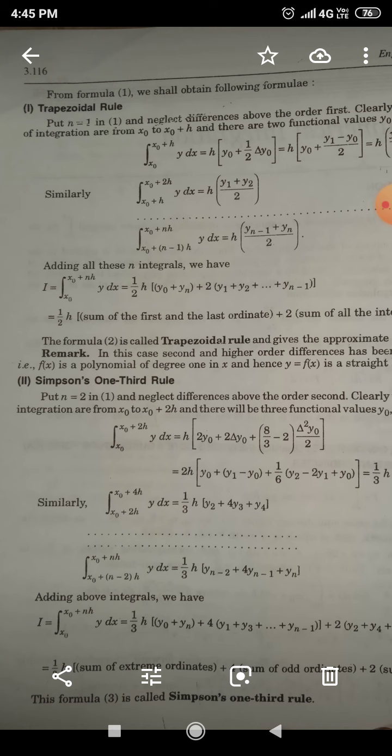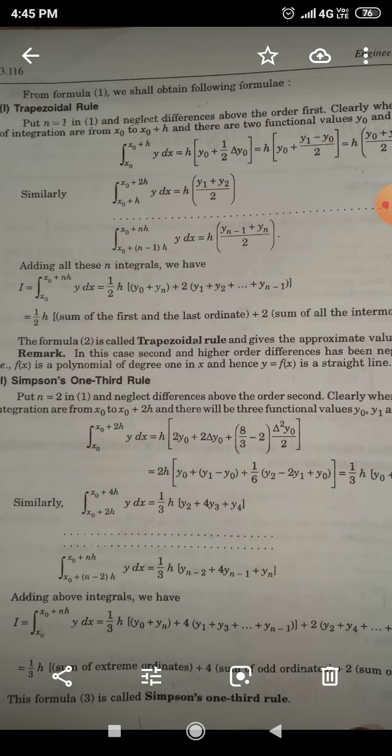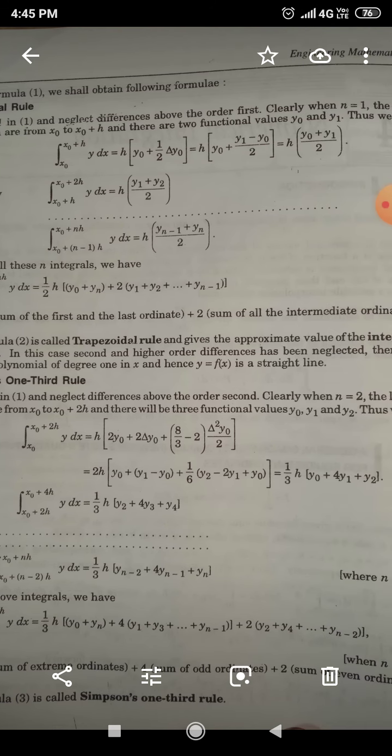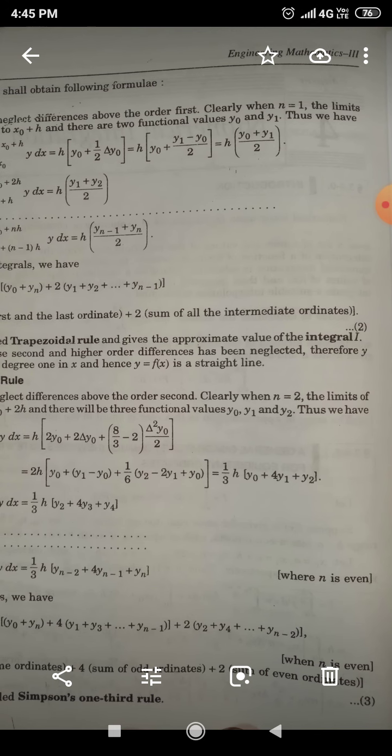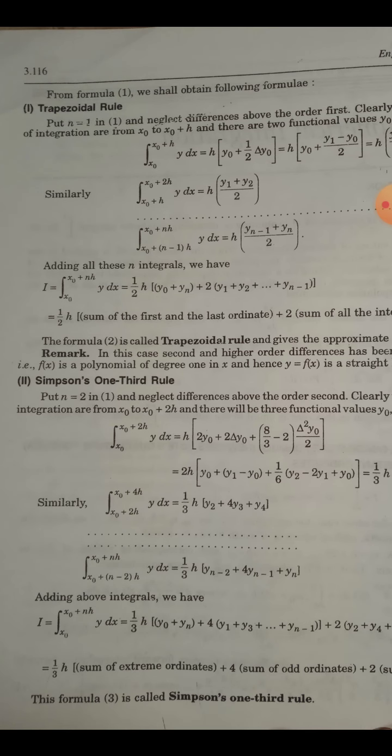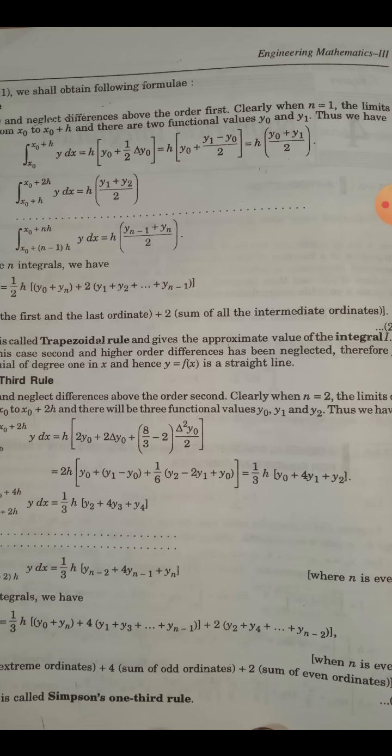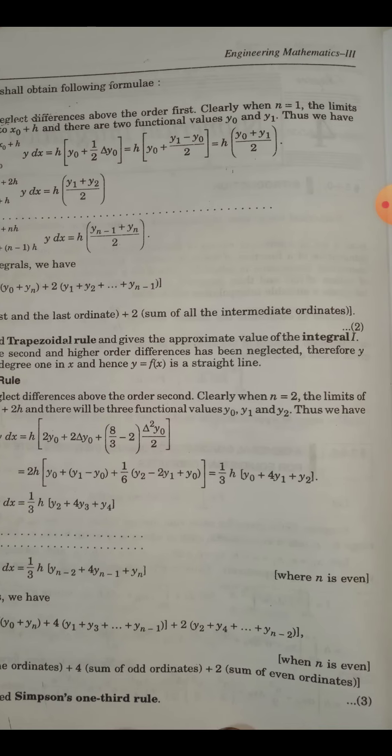Now adding all these equation left hand side will become lower limit of first is x_0 and upper limit of last is x_0 plus n h so limit will be x_0 to x_0 plus n h Y dx and right hand side adding all term we get 1/3 H [y_0 plus y_n plus 4(y_1 plus y_3 plus dot dot dot y_n minus 1) plus 2(y_2 plus y_4 plus y_n minus 2)] when n is even. So it will be 1/3 H [sum of extreme ordinate plus 4 sum of odd ordinate plus 2 sum of even ordinate].